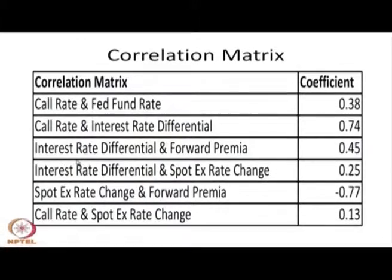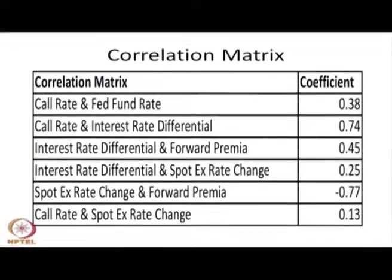Similarly, the third correlation I examined is between interest rate differential and forward premium. Whenever the interest rate differential is high, the forward premium should also be high — because the forward premium should bridge the interest rate differential so as not to create any kind of arbitrage between money market and forex market. I found a positive correlation of 0.45 between the interest rate differential and forward premium, confirming that when the interest rate differential is high, forward premium is also high.